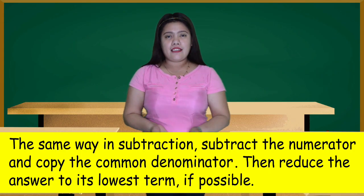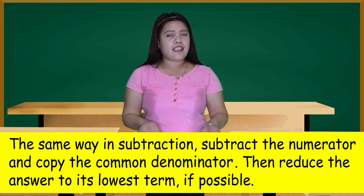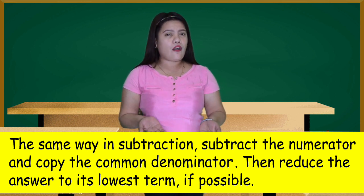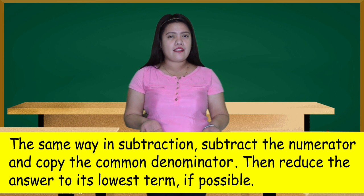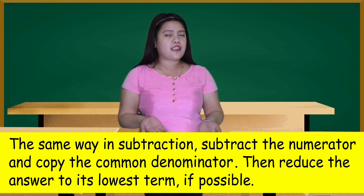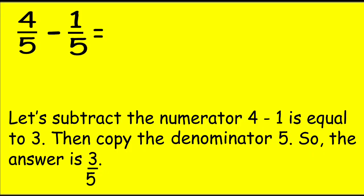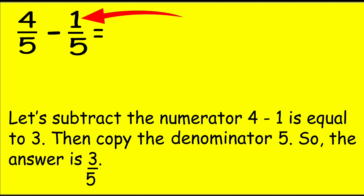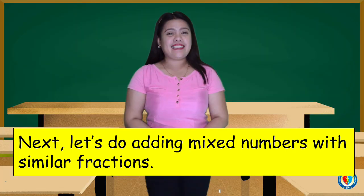The same way in subtraction — subtract the numerator and copy the common denominator. The answer is 3/5. Then, reduce the answer to its lowest term if possible.